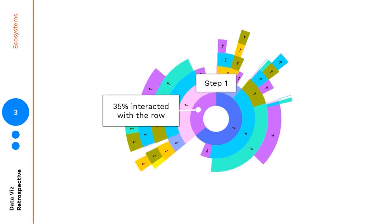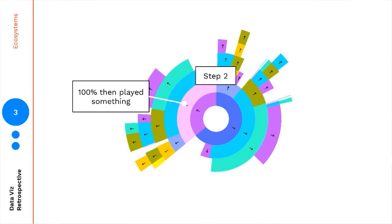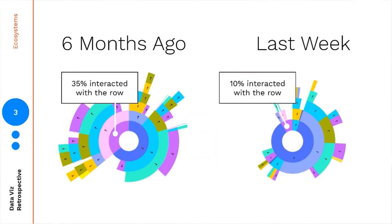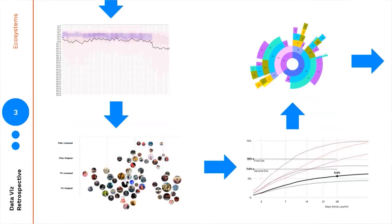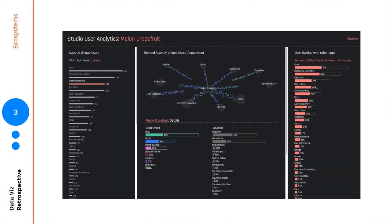Maybe I want to understand how people are actually behaving within the UI itself. I can see that 35 percent of all people who saw this on their home page interacted with this row and then 100 percent of them ended up playing something — but that was six months ago. Last week only 10 percent of people interacted with that row. So it's not only about looking at different cuts and different abstractions of the data, it's also about understanding how these systems and snapshots of them change over time. In this last example I jumped through many different dashboards that are not isolated — they all bring context to our users, and we even have a dashboard of dashboards to understand how this is happening.